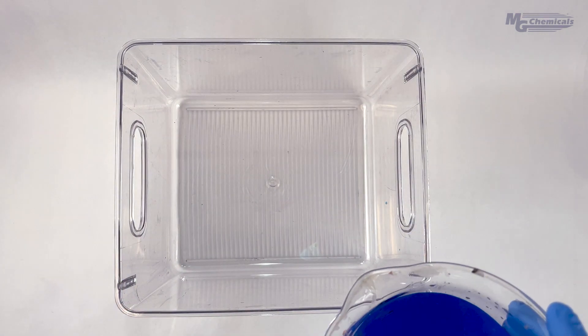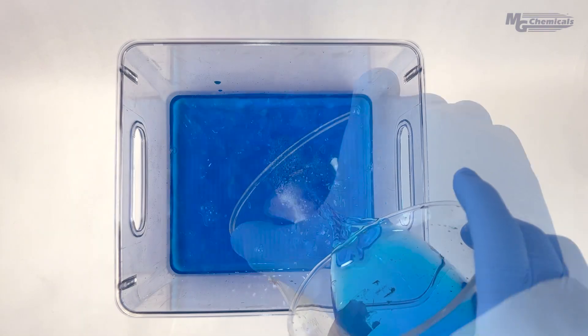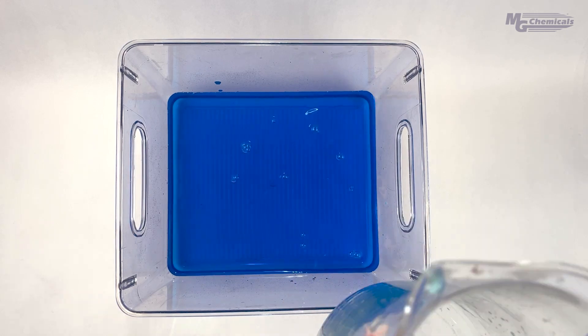Now it's time to plate. Pour the copper sulfate solution into the container and place onto a magnetic stir plate.